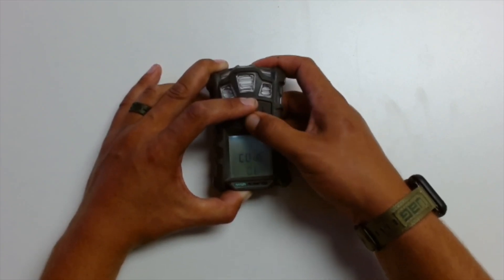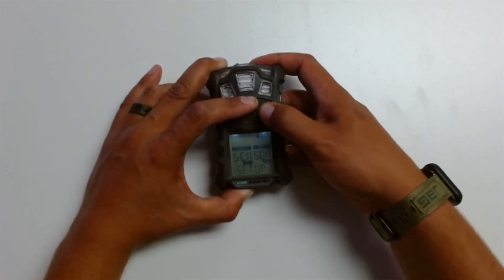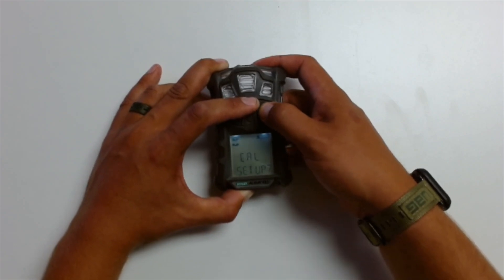So once you have 672 in there, push the center button to accept and then you're into your main menu. From here, you can see sensor setup, calibration setup, alarm setup,